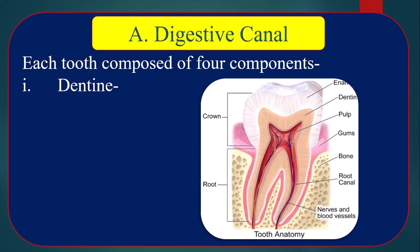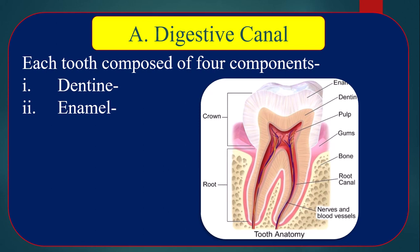Number one, dentine — the main part of the tooth, consisting of a hard substance. Number two, enamel — the crown is covered with enamel, which is the hardest component of the tooth. Both dentine and enamel are composed of calcium phosphate, calcium carbonate, and fluoride. Enamel covers the dentine and forms the visible outer surface of the tooth.